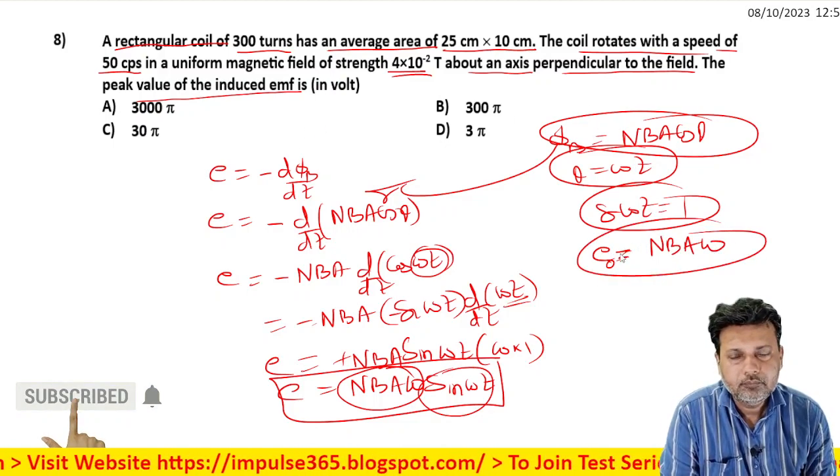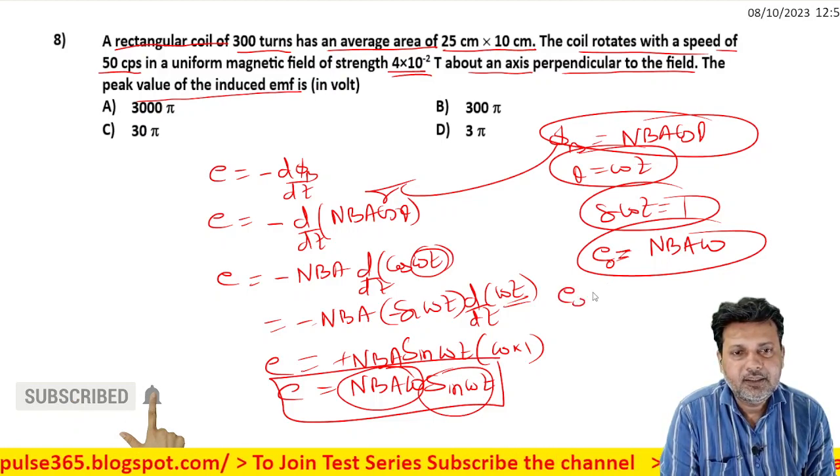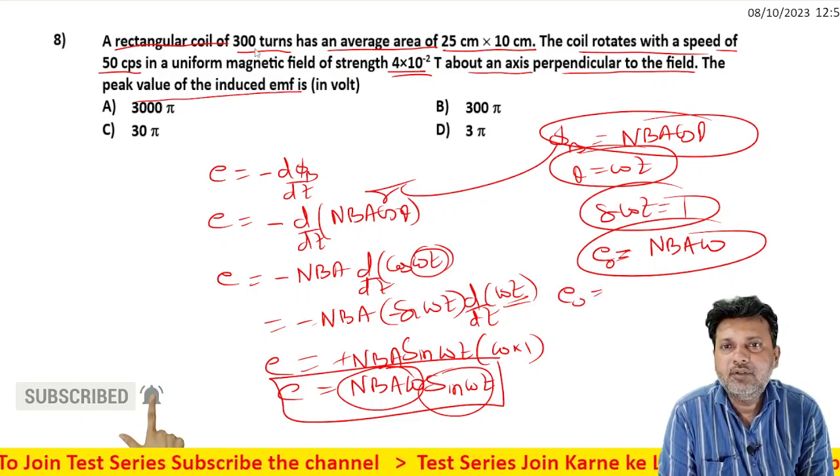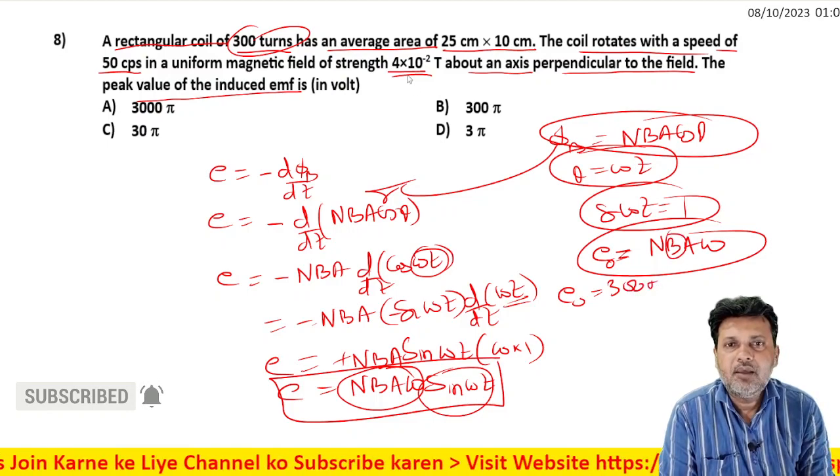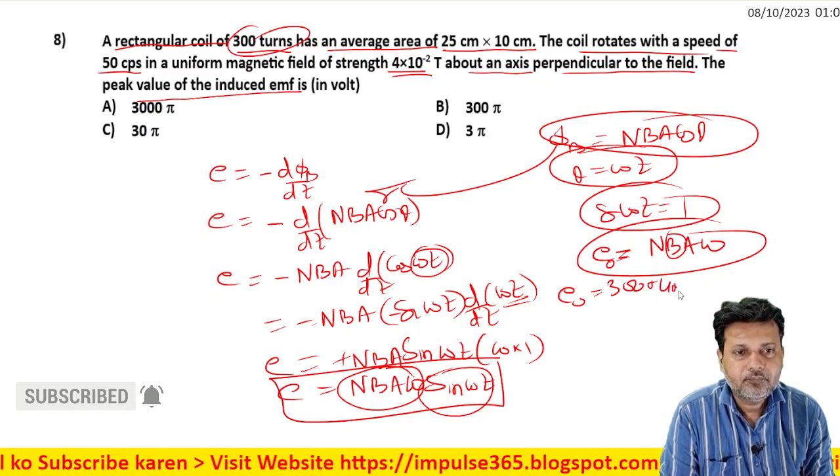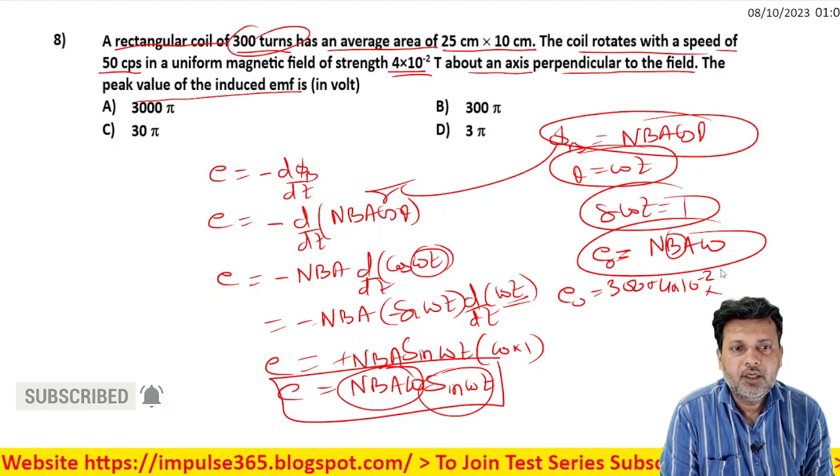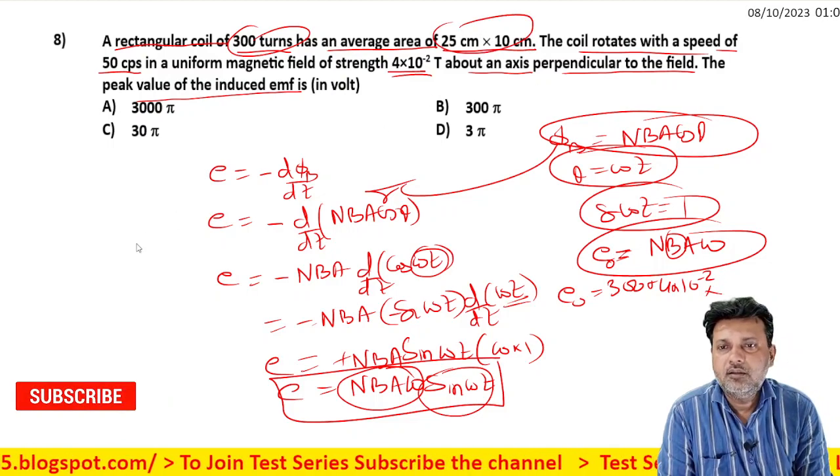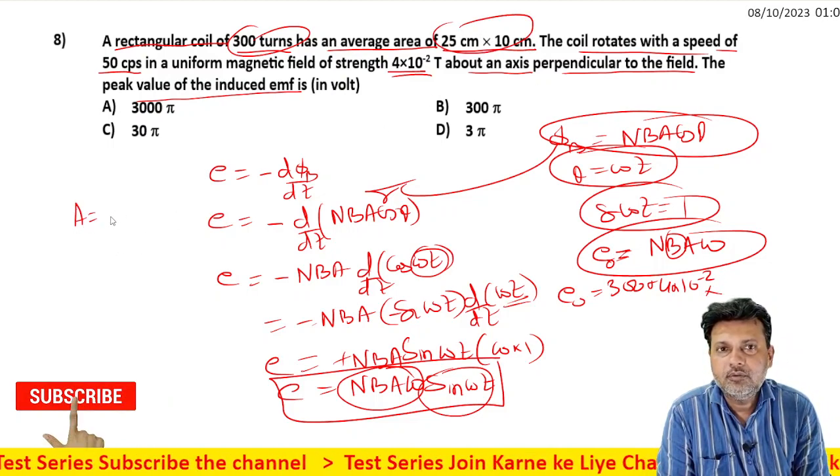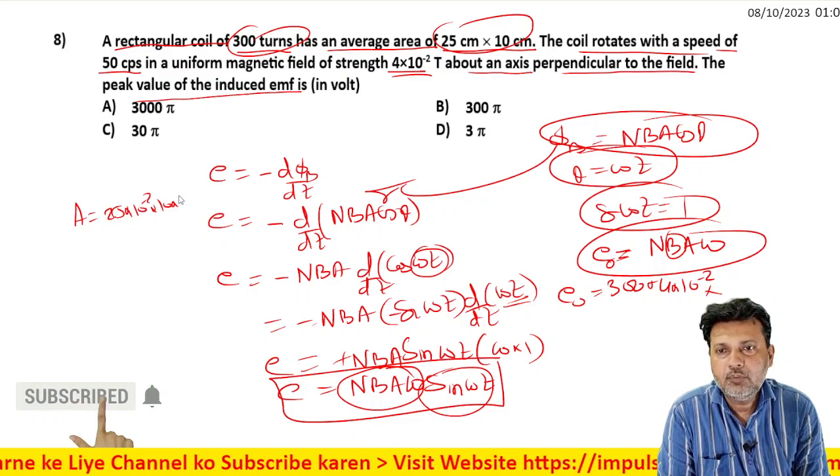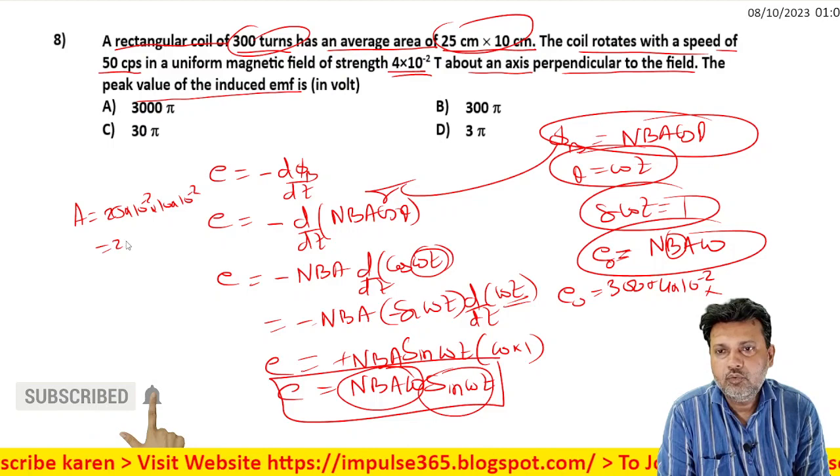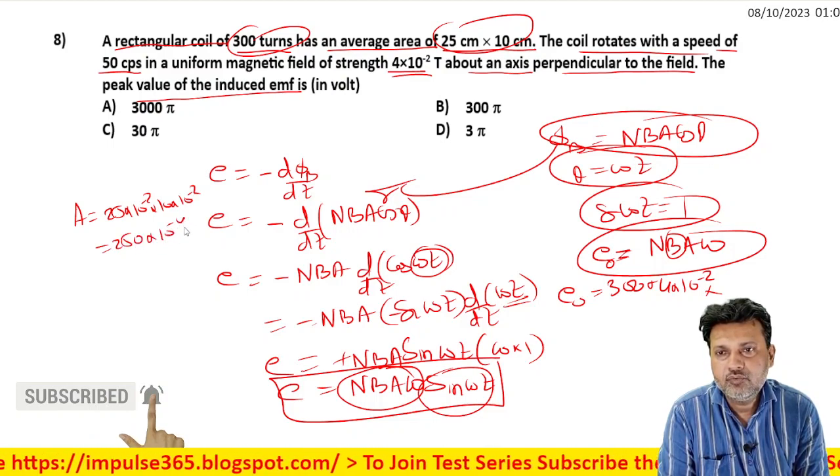Now for calculation: N = 300 turns, B = 4×10^-2 Tesla, Area = 25×10^-2 m × 10×10^-2 m = 250×10^-4 m².